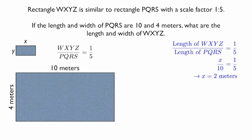If we talk about the length measurements, the length of WXYZ divided by the length of PQRS would be 1 over 5, so x has to be 2 meters. Likewise, the width, that ratio must be 1 over 5 as well, 1.25 meters.